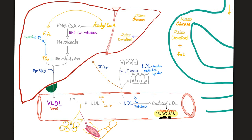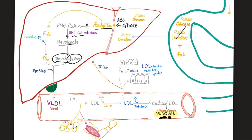When you eat dietary fat, cholesterol is absorbed from the intestine, goes through portal circulation, and ends up in the liver. In the liver, citrate from the TCA cycle becomes acetyl-CoA via the ACL enzyme (ATP citrate lyase). Acetyl-CoA becomes HMG-CoA via HMG-CoA synthase, then mevalonic acid via HMG-CoA reductase. Mevalonate gives cholesterol esters in the liver. Cholesterol combined with triglycerides forms VLDL, which leaves the liver into the bloodstream.